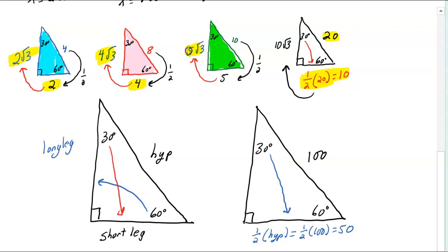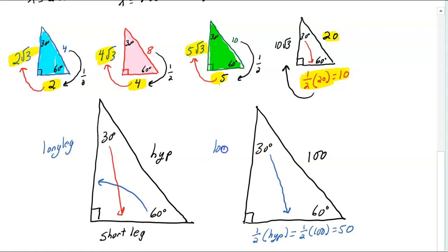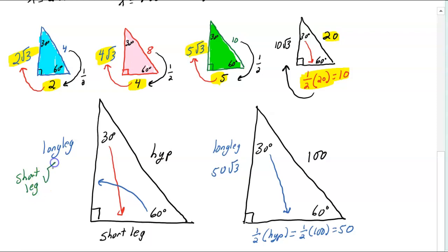You'll notice: short leg 5, long leg 5√3; short leg 4, long leg 4√3; short leg 2, long leg 2√3. So in our example, the long leg is 50√3. The short leg times √3 equals the long leg.